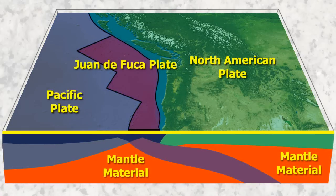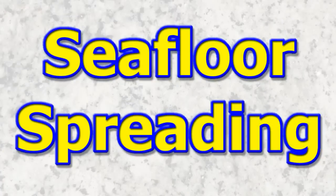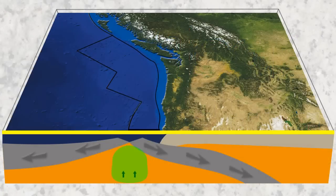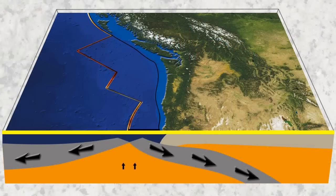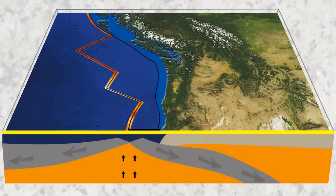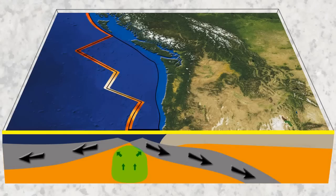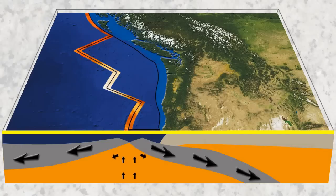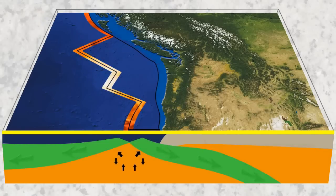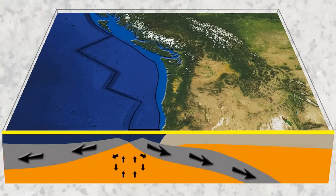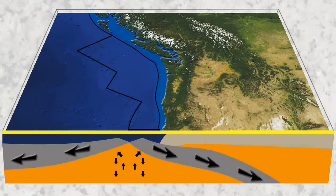So we have the North American plate, the Juan de Fuca plate, the Pacific plate, and the Earth's mantle. This process begins with mantle material welling up due to convection. The upwelling of mantle material pushes up in between the plates, pushing the plates apart. This mantle material that reaches the sea floor becomes new plate material.